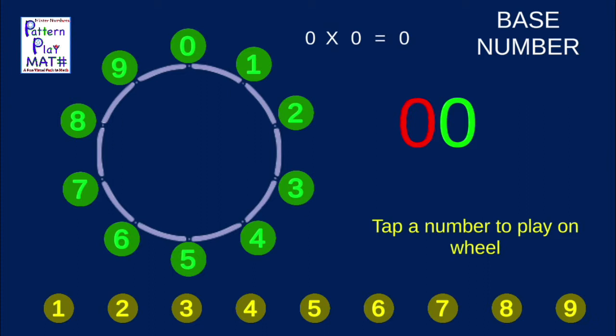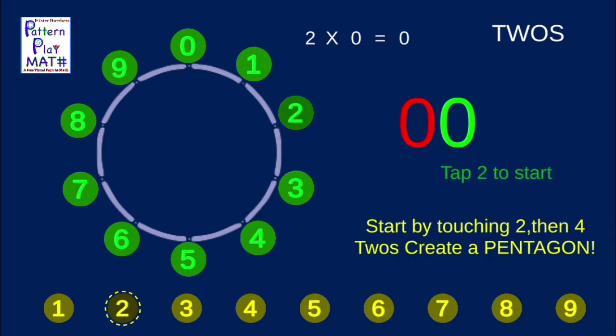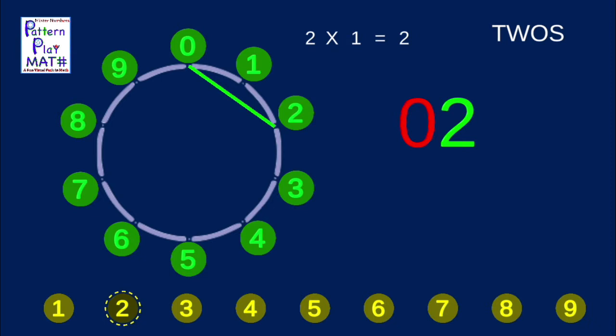We'll start with an easy jump, the 2's, to show you how it works. We start at 0, so we touch 2, and there's our line.